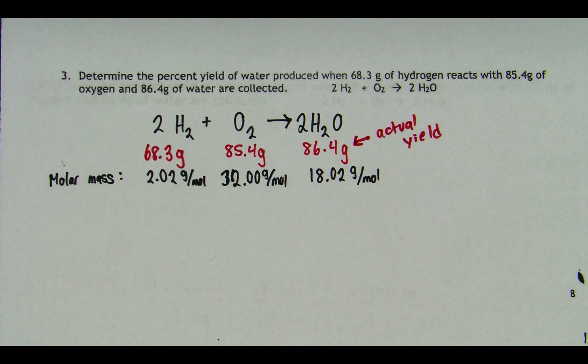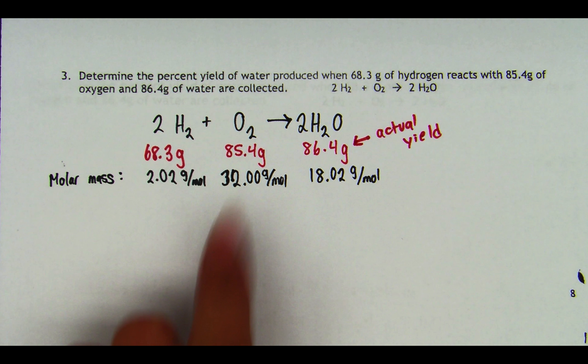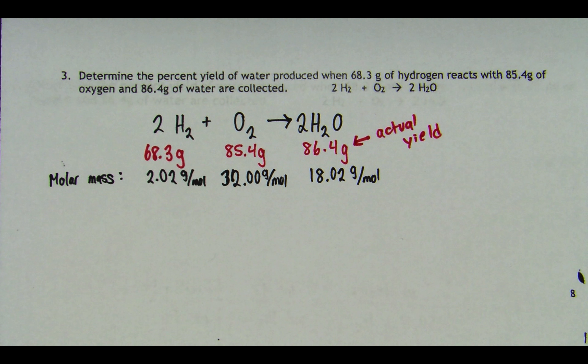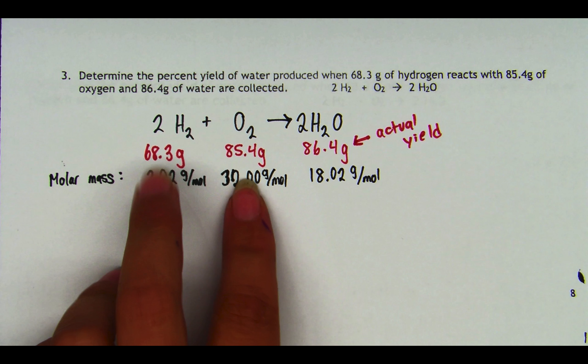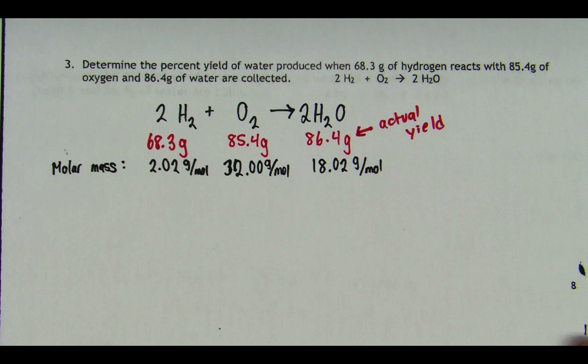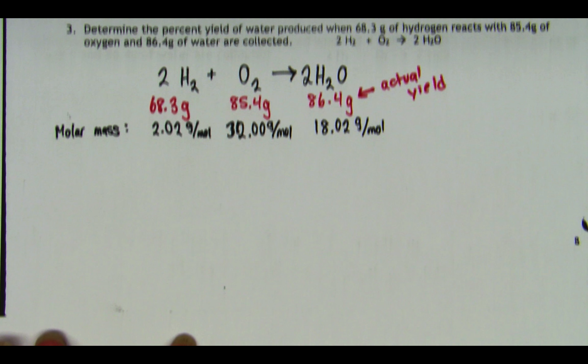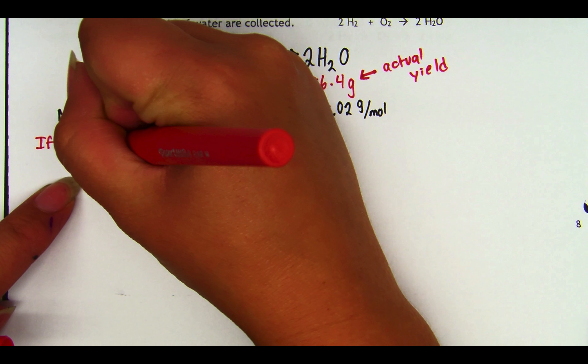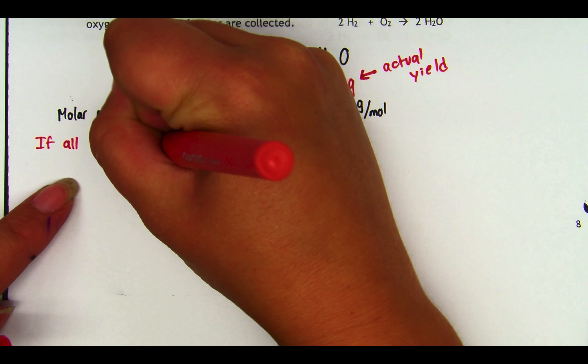So we're going to find our limiting reagent. And we're going to find our limiting reagent by solving it out. If all of this reacted, how much water would I get? If all of this reacted, how much water will I get? And just like I can't make more sandwiches than I have bread, I can't make more water molecules than I have either of these. So whichever number is the lowest, that's going to be my limiting reactant, and that's going to be my theoretical yield. So let's first solve it out, if all of the H2 reacts.